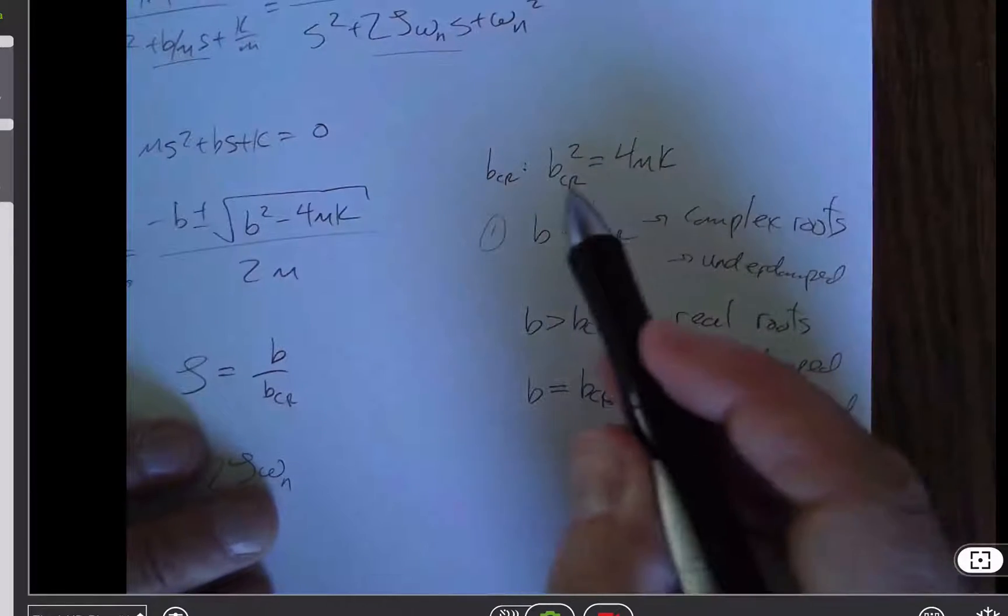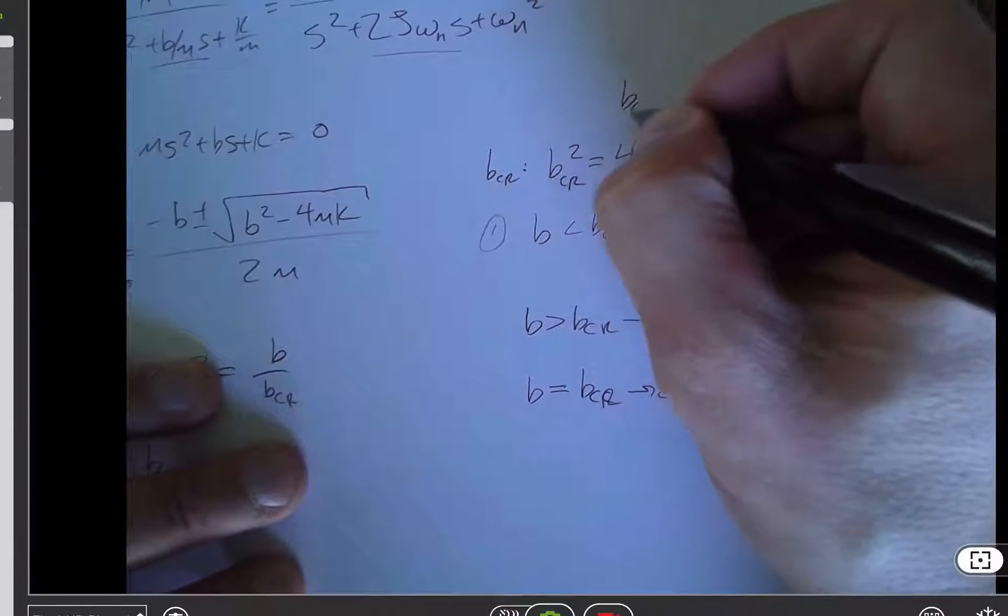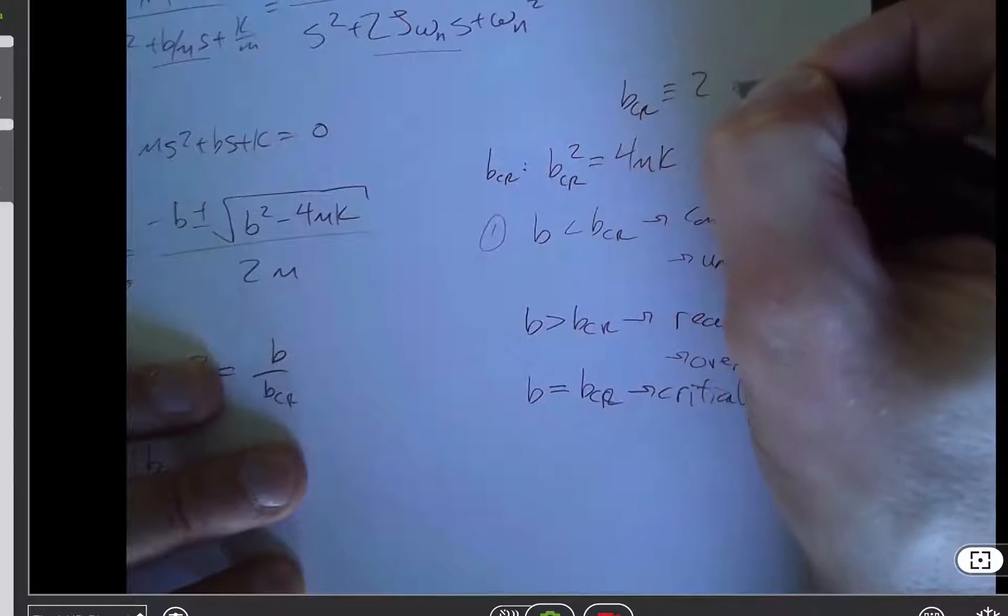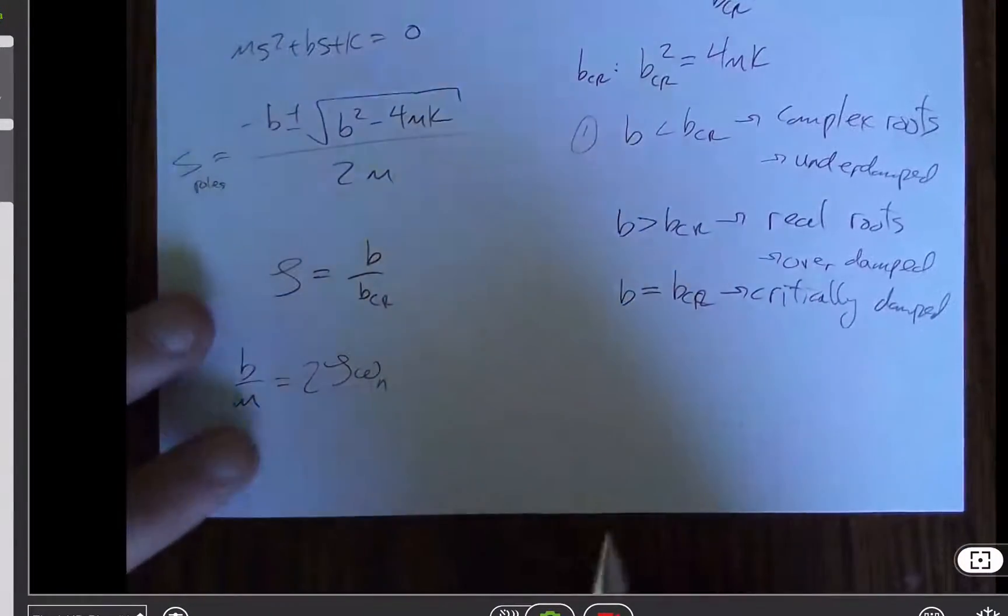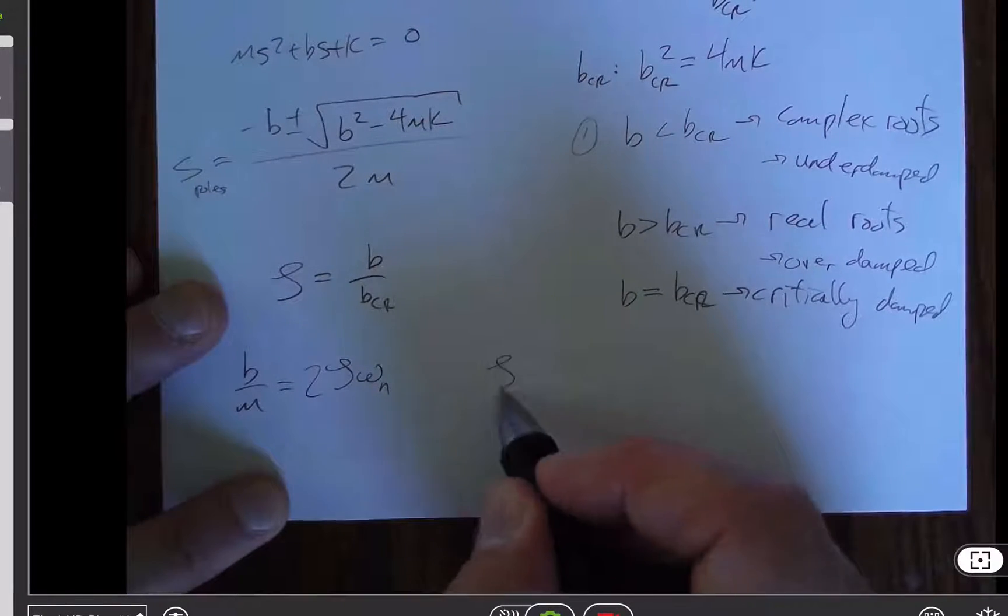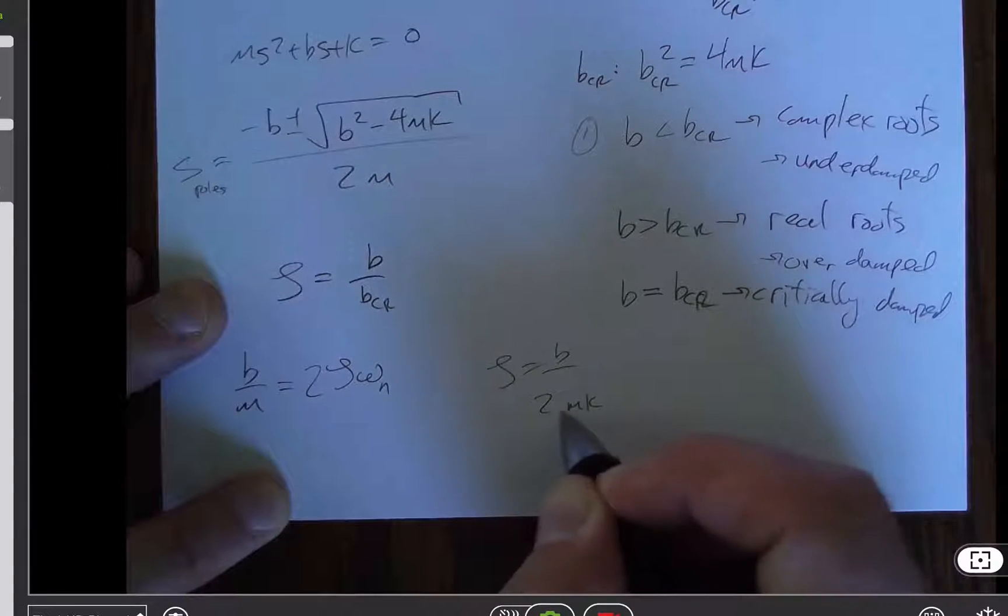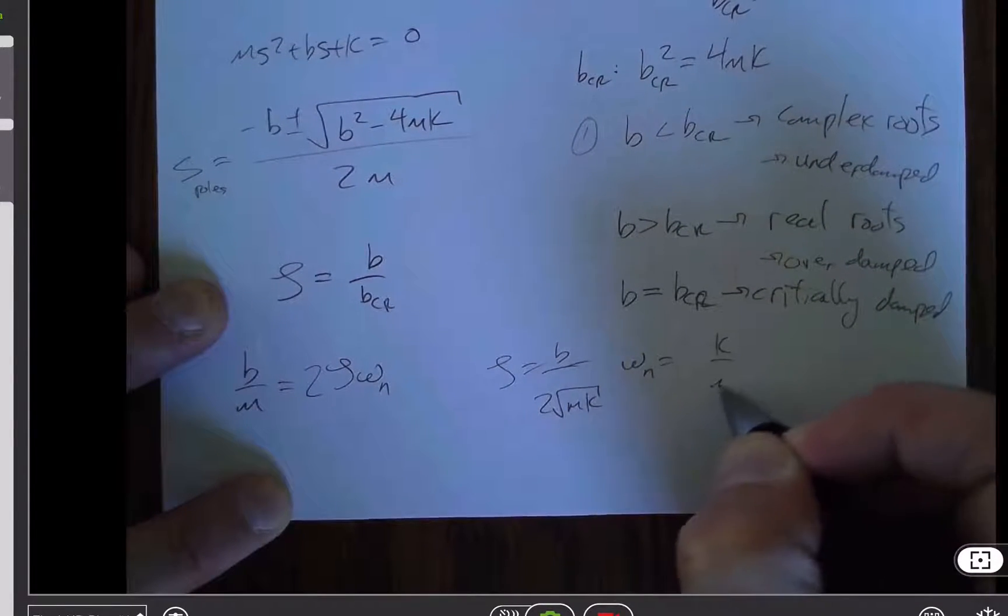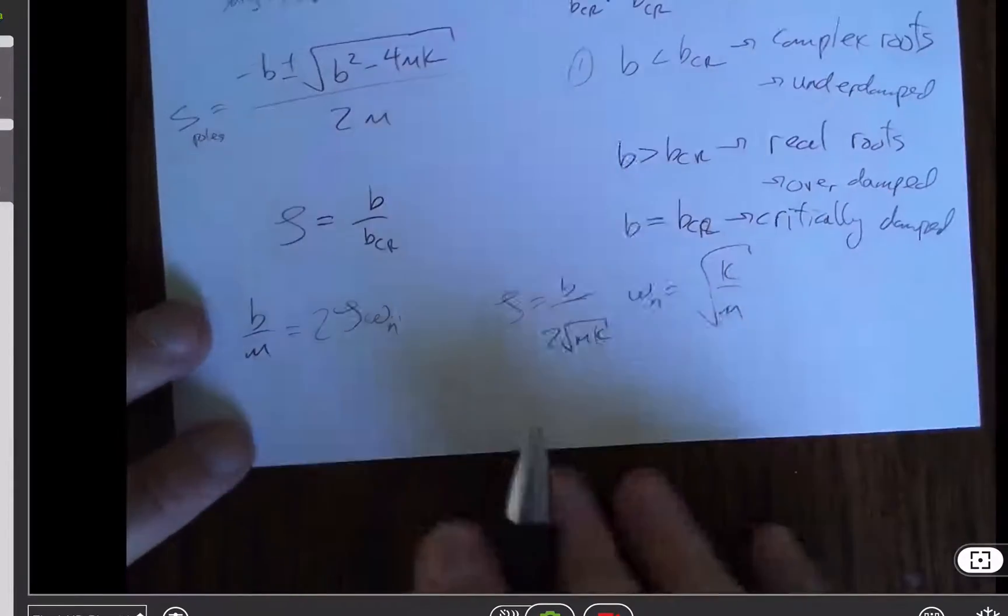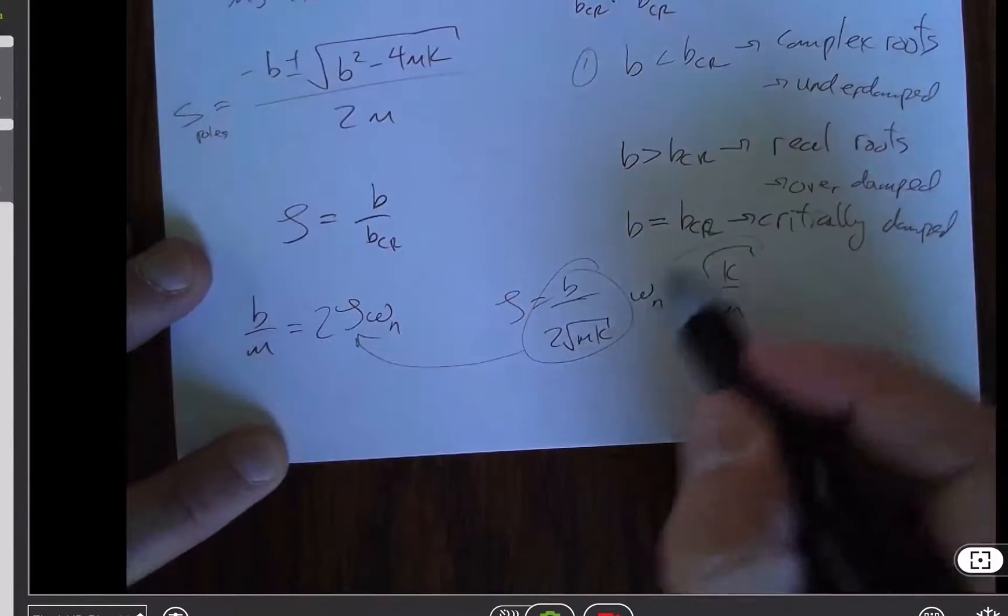If we come back over here to b critical, if we take the square root of both sides, we're saying that b critical is defined to be 2 times the square root of m times k. So zeta is b over 2 m k square root. And omega n is k over m square root. So what happens if we take this and substitute it in there and take that and substitute it in there?